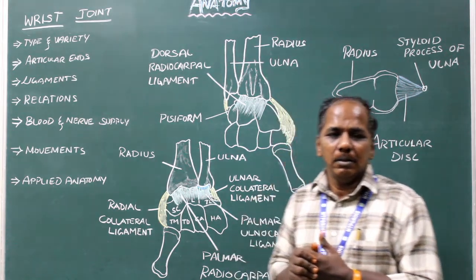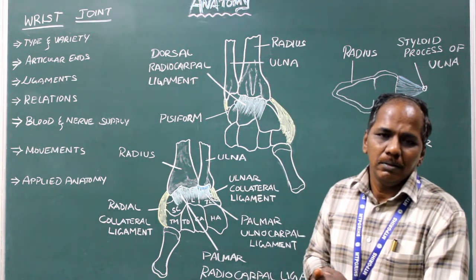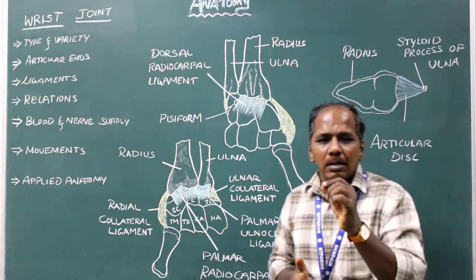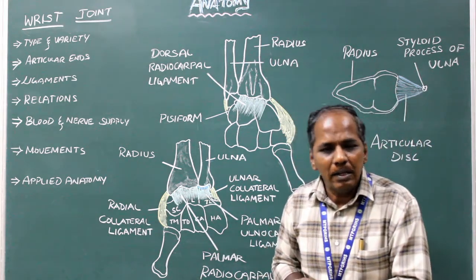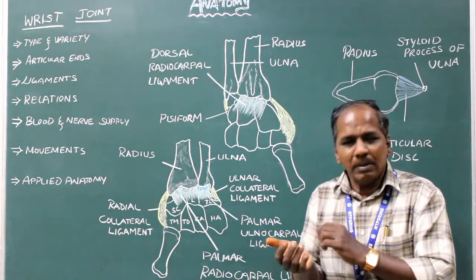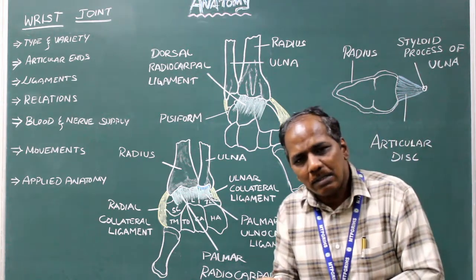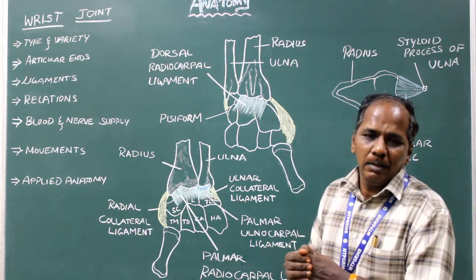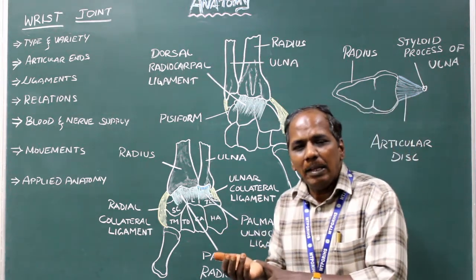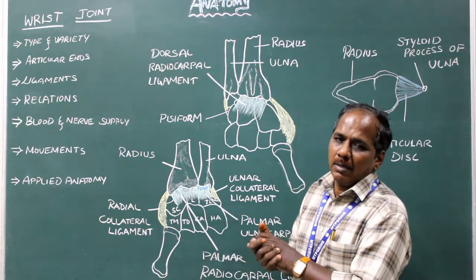Blood supply: branches from the anterior interosseous artery and transverse carpal branches. Nerve supply: articular branch from the anterior interosseous nerve and the posterior interosseous nerve.